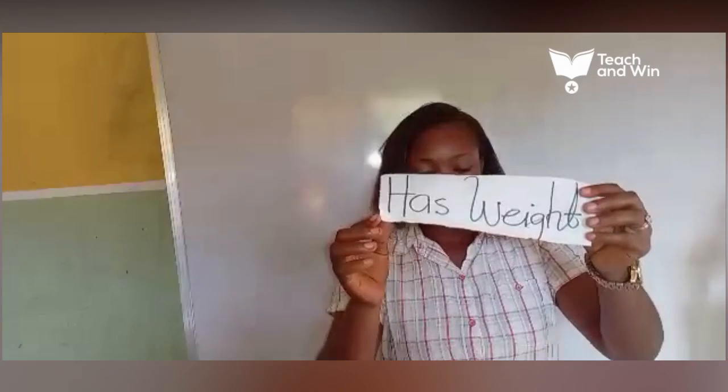The first one we want to talk about is air has weight. The second one is it has air pressure. And the third one is it fills space. So remember the three we've talked about: it has weight, it has air pressure, it fills space.